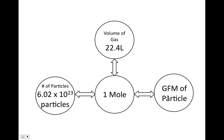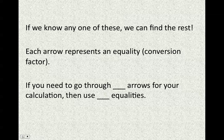We can move between mass, volume, and number of particles of a substance directly by using two conversion factors. If we know any one of these, we can find the rest. Any time you use this flow chart, you move through an arrow that represents an equality or conversion factor. Today we're going to be going through two arrows for our calculations, so we're going to use two equalities or two conversion factors.